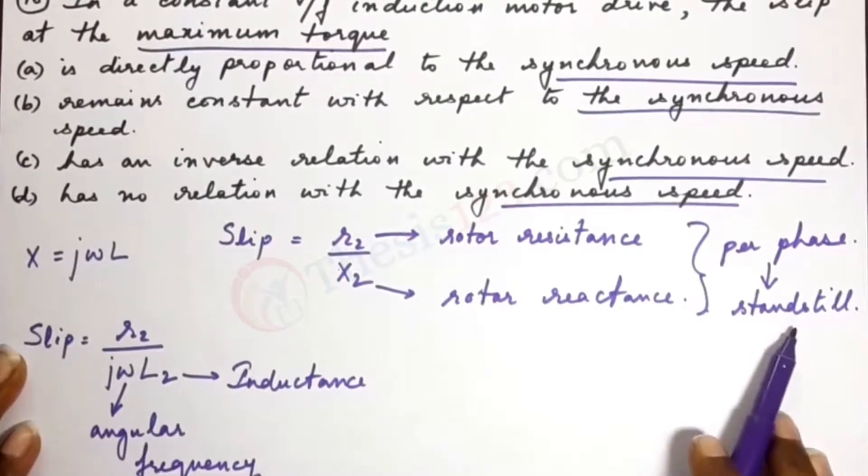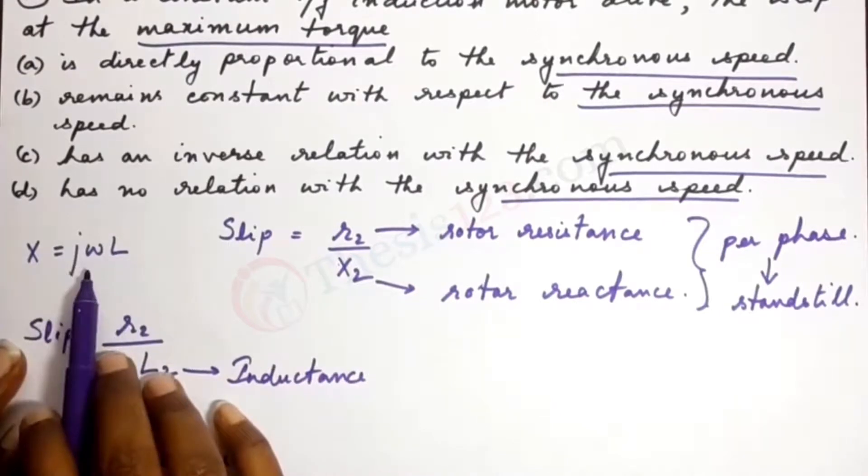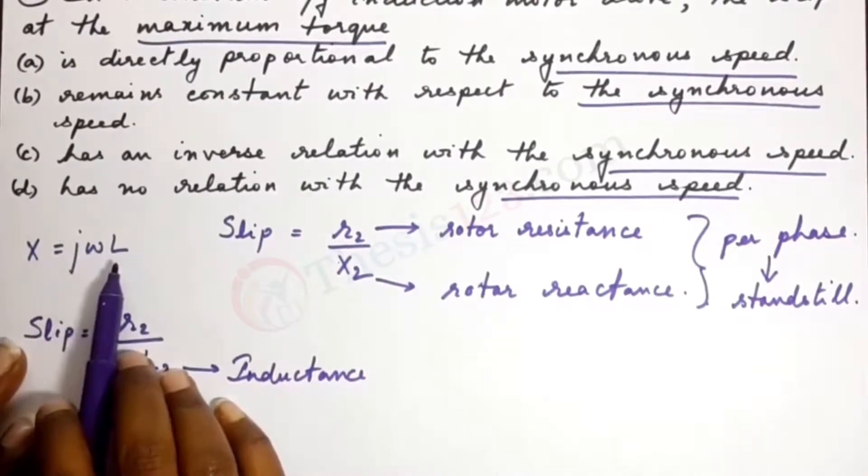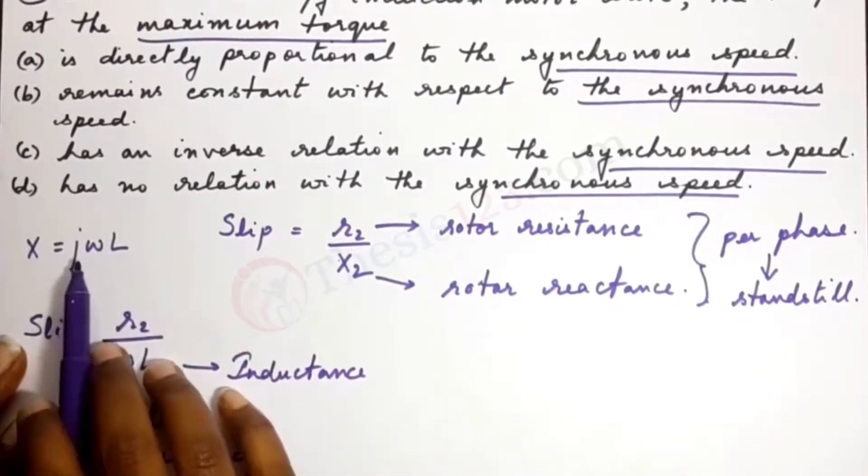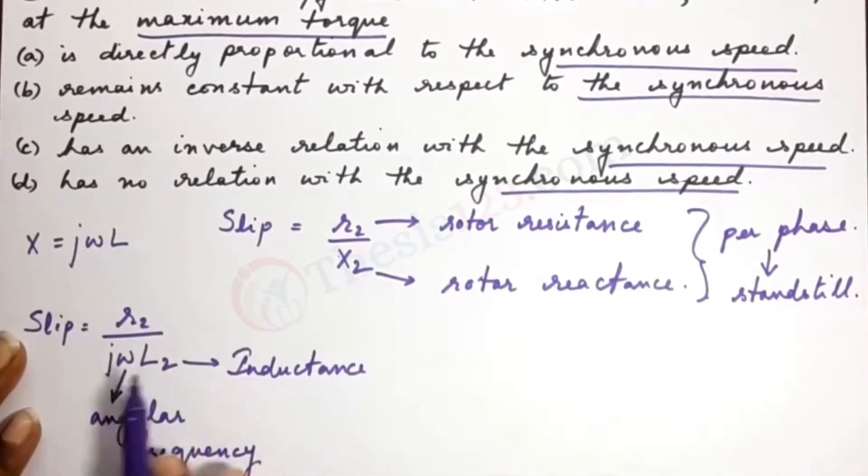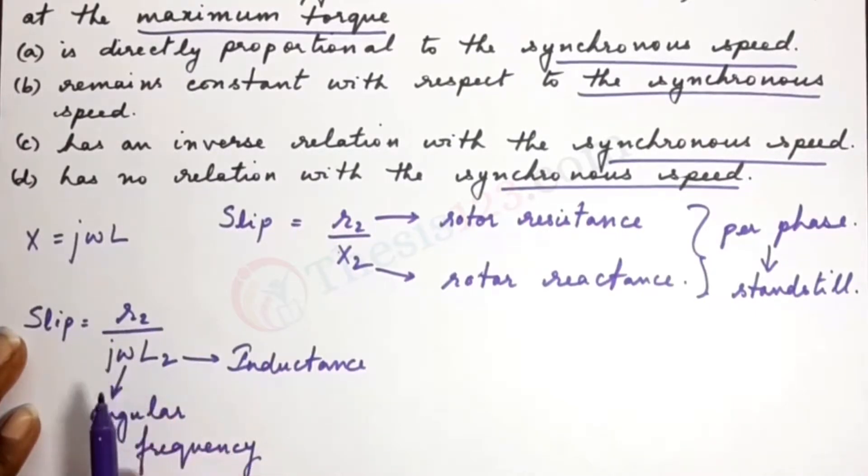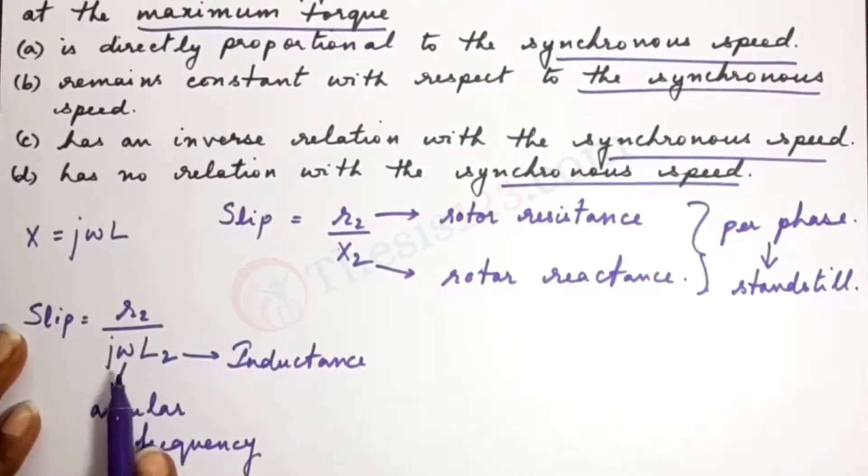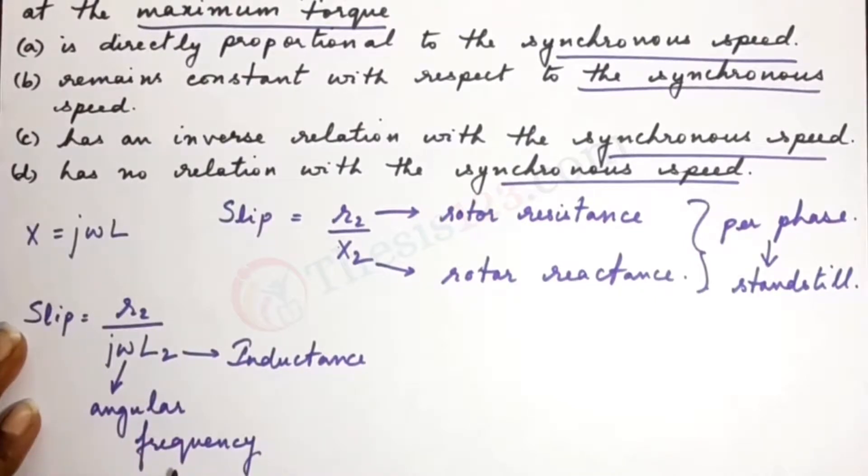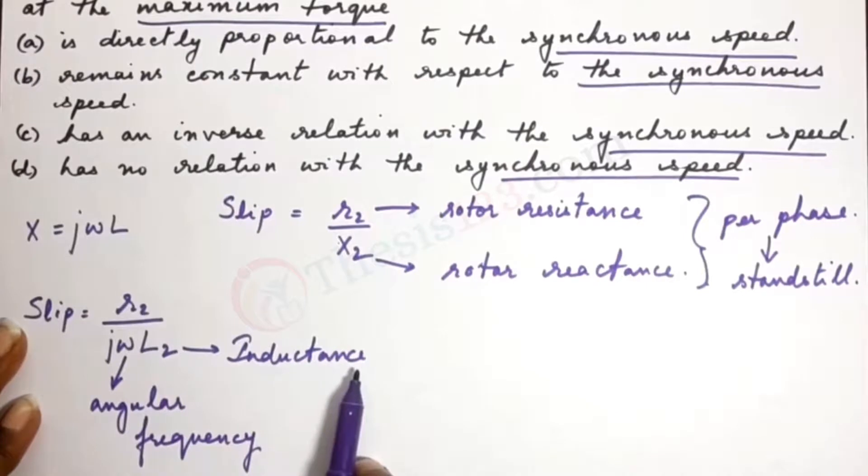The rotor reactance can be expanded in terms of angular frequency and inductance: X equals j omega L. Placing this in the ratio, we obtain slip equals R2 divided by j omega L2, where omega is the angular frequency and L is the inductance.